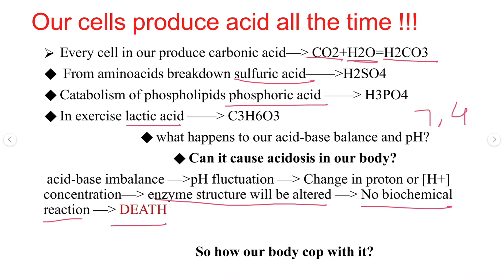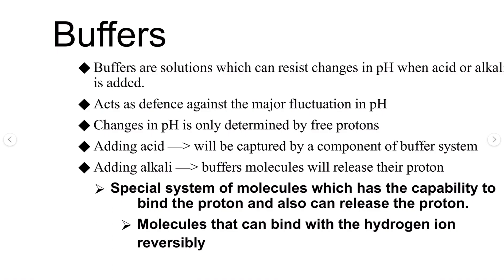In a normal healthy person this doesn't usually happen because our body has systems to deal with acid-base balance — we have buffers, the respiratory system, and the renal system. We will talk about buffers here, and respiratory and renal mechanisms will be covered in physiology. So what are buffers?